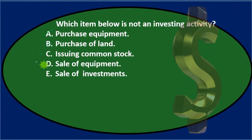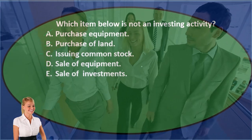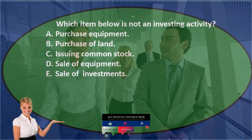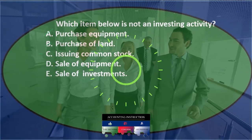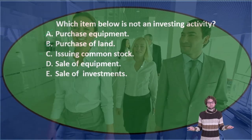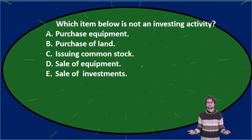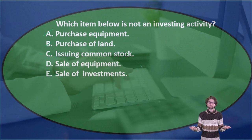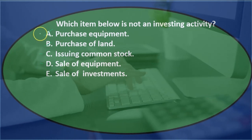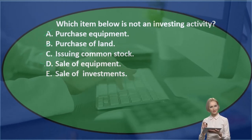D. Sale of equipment. The journal entry would be debit cash, credit equipment, possibly debit accumulated depreciation, and there may be a gain or loss. The gain or loss is an income statement account, so we might think it's in operating activities, but typically it's not. We sold a long-term asset — equipment — so that's typically investing. It's a bit more confusing to think of the sale rather than the purchase as investing, but if the purchase is investing, the sale can also be considered investing.